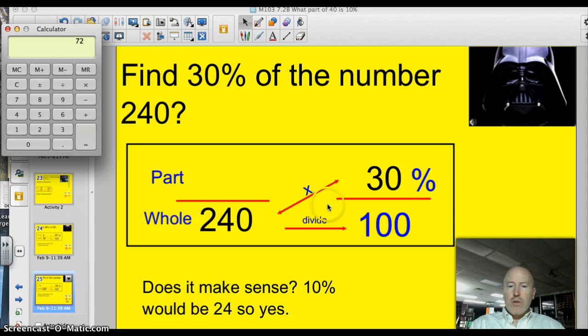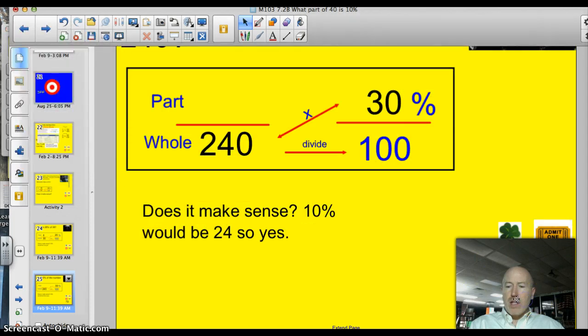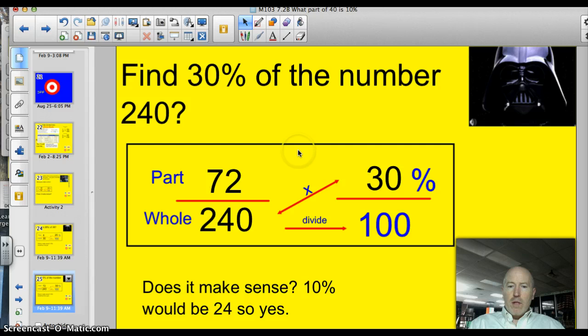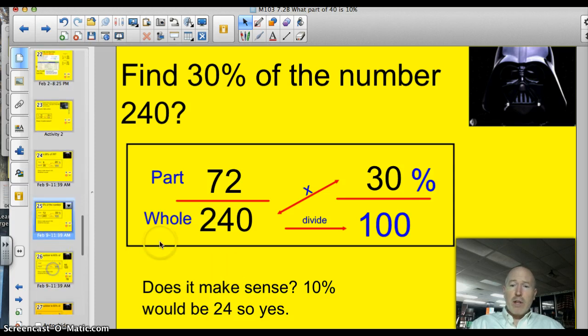We've got 72. Let's pop that number in and see if our answer makes sense. Alright, we need 30% of 240. Well, 10% would be 24, so 3 times 24 is 72. Yeah, that makes sense. I also can make up 33% would be 80, so that would be a third of it. So, yeah, 72 makes sense. And we've accomplished our second problem for the night.